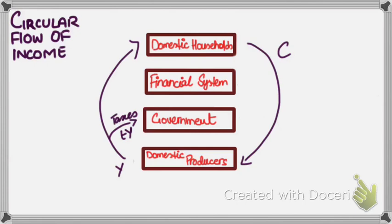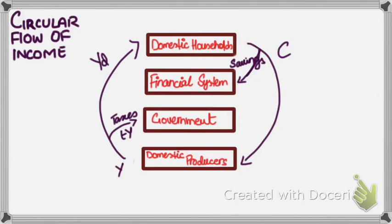So an arrow comes out of the circular flow to the government, and this represents taxes, denoted as tY, where Y is equilibrium income and t is the average tax rate. For example, if t is 0.1 and income is 100, then 10 goes to the government as taxes. The leftover part is YD — disposable income, or income after tax has been paid — and YD goes back to the households. But do households spend all of their income on goods and services? They give some of it to financial institutions, that's banks, and this part is savings.